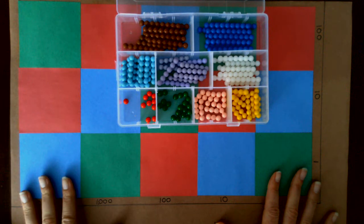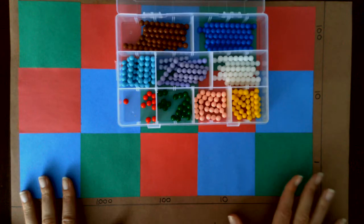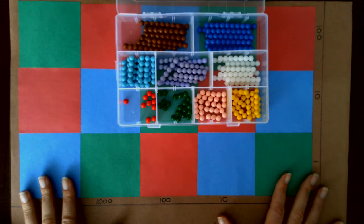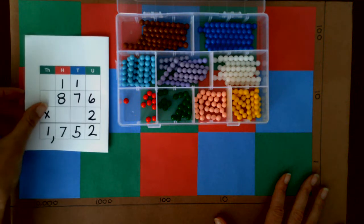Just with the color squares which is nice because then the beads don't have a tendency to roll as much. We are going to be doing this problem: eight hundred seventy six times two.